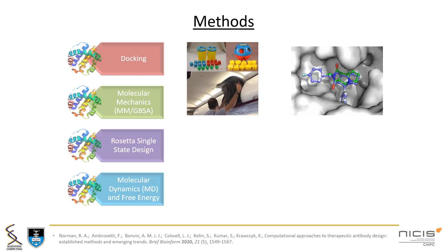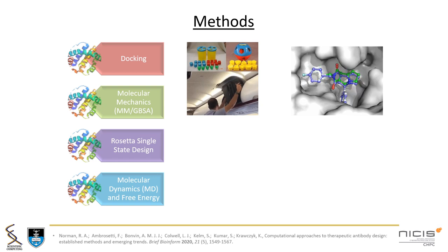These output poses can then be scored using MMGBSA, which predicts the relative binding energies of small molecules to proteins. This is a relatively quick method, which gives us an approximation of which antibodies bind the cancer-associated ligand better.